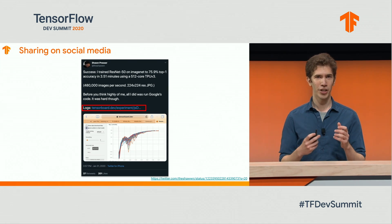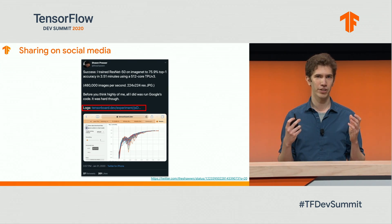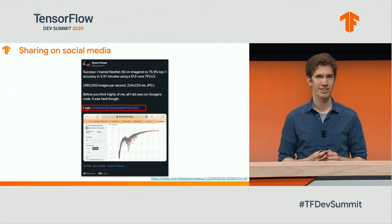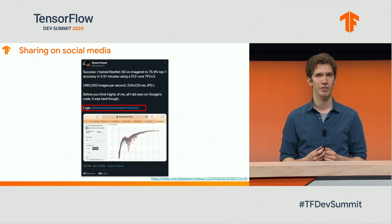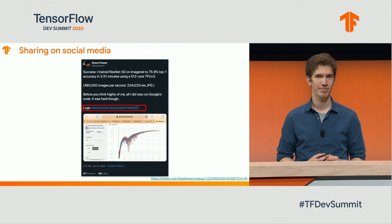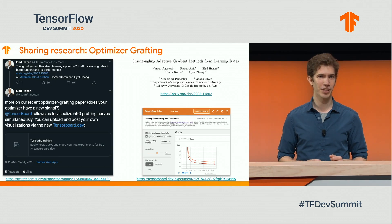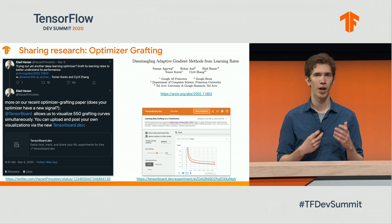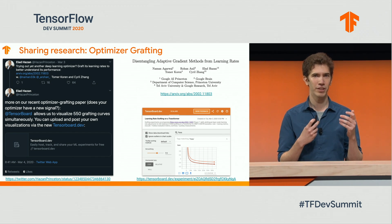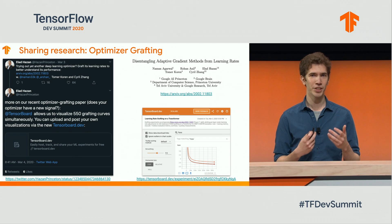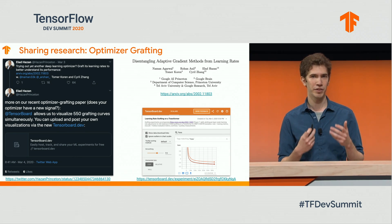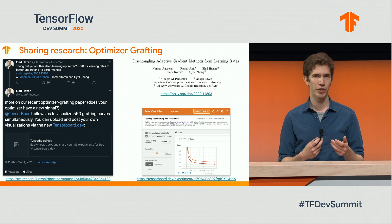In this example, Sean is using Twitter to share some work on large-scale ML experimentation, and TensorBoard.dev is used to help tell that story more effectively. This team of researchers at Google recently published a paper on optimizer grafting to help better understand optimizer performance. Along with the paper, they've also uploaded results to TensorBoard.dev to show 550 grafting curves that help illustrate their technique.